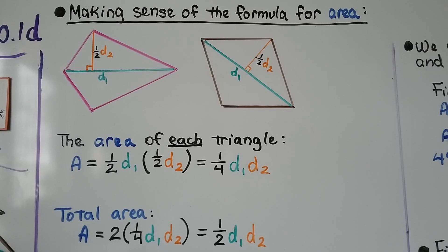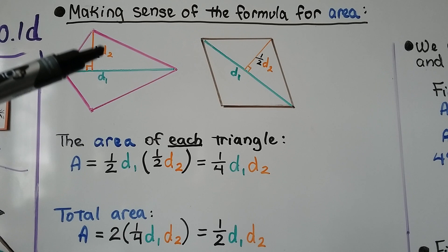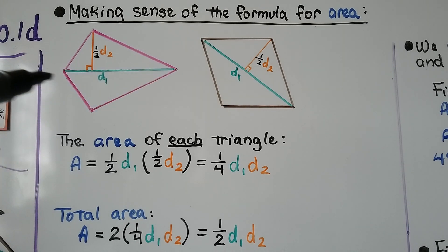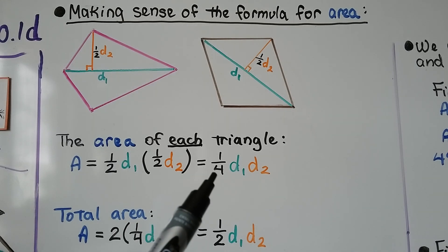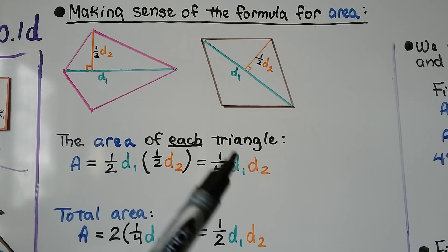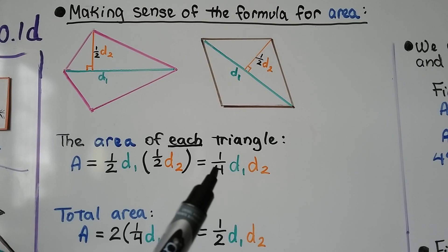We can make sense of the formula for area. Take a look at this diagram of a kite. The area of each triangle would be half of d1 — so half of this green line — times half of d2. That gives us one-fourth of the first diagonal times the second diagonal, and that's just for each triangle. For the total area, we would do two of these.